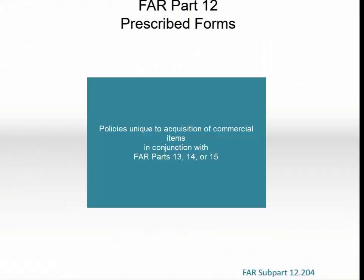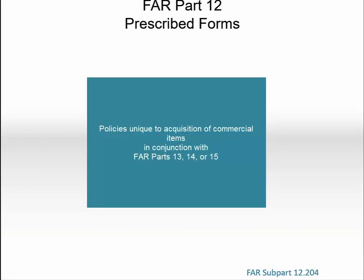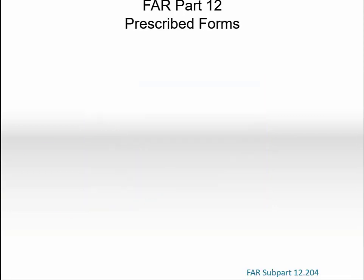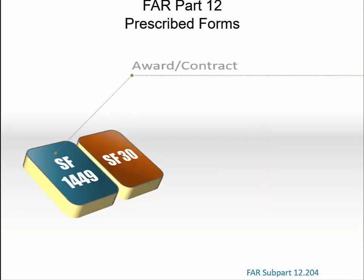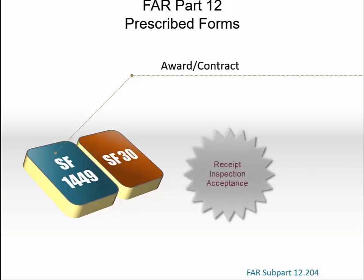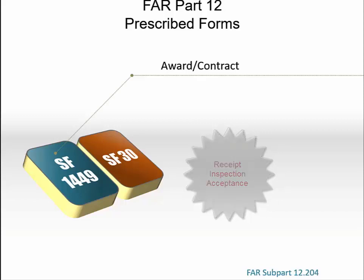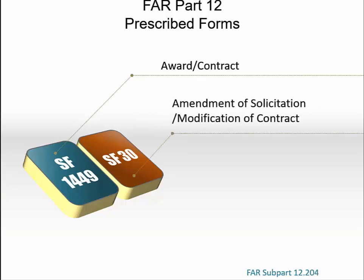The Contracting Officer must use the policies unique to the acquisition for commercial items in conjunction with FAR Parts 13, 14, or 15. Standard Form 1449 is used when issuing written solicitations and awarding contracts and placing orders for commercial items. The form may also be used for documenting receipt, inspection, and acceptance of commercial items. Other forms shall not be used for solicitation or award of contracts or orders for acquisition of commercial items. Standard Form 30 can be used for amending requests for proposals and for amending requests for information.